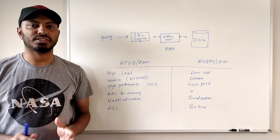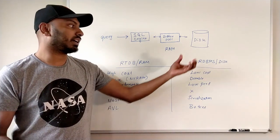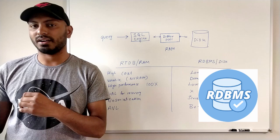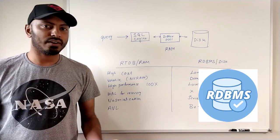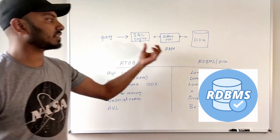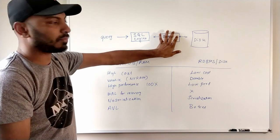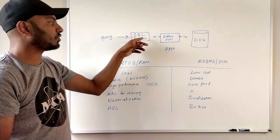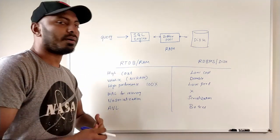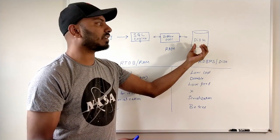Real-time databases, also called main-memory databases or in-memory databases, use RAM to save all of the data. Unlike RDBMS, which saves data to disk. RDBMS was introduced in the 1980s during the database evolution era, and people doubted whether it would really work for their use cases — but here we are, still using RDBMS heavily today.